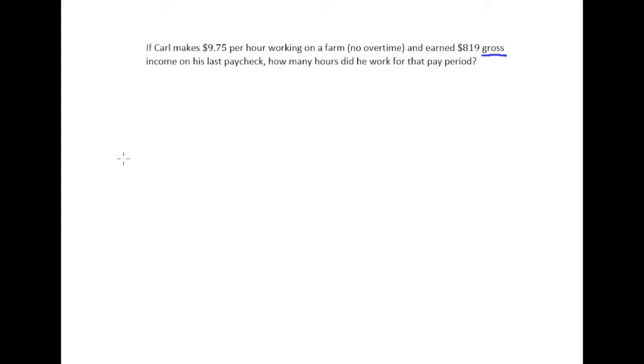So we know how much he makes per hour, and then we know the grand total of how much he makes. So if we can figure out basically how many times 9.75 goes into 819, then that should give us the number of hours, right?